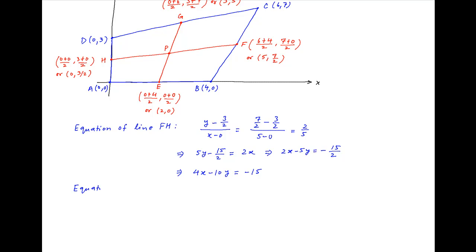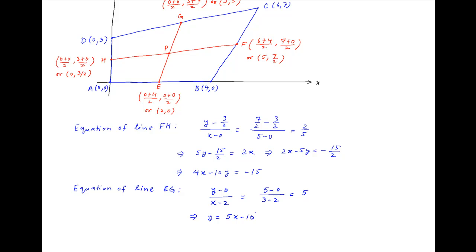Similarly, the equation of line EG is: (y - 0) / (x - 2) = (5 - 0) / (3 - 2). The right-hand side simplifies to 5. Cross multiplying, we get y = 5x - 10.